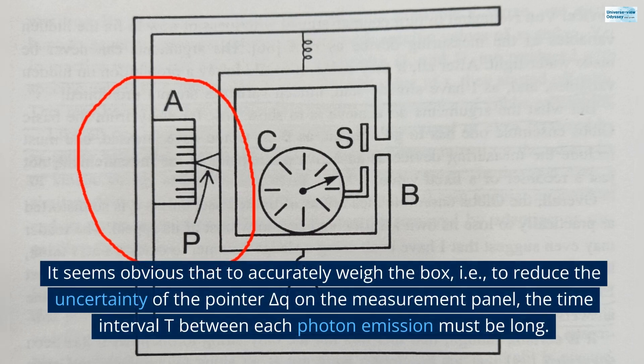It seems obvious that to accurately weigh the box, i.e., to reduce the uncertainty of the pointer delta Q on the measurement panel, the time interval T between each photon emission must be long.